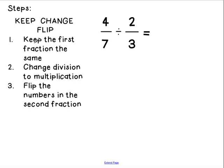So, the first one, keep. We're keeping that first fraction the same. So, I'm actually just going to rewrite this below. I'm going to rewrite 4 over 7. The second one is change the division to multiplication. So, that sign is going to become multiplication. And then flip the numbers in the second fraction. So, the 3 goes to the top and the 2 goes to the bottom. So, this becomes 3 over 2.